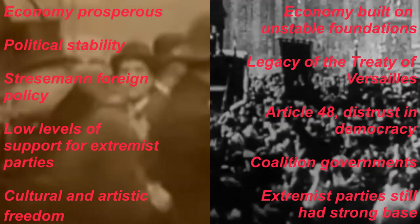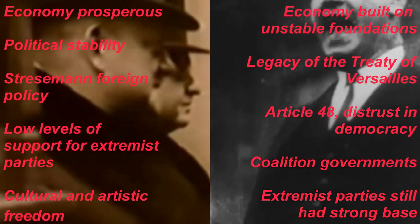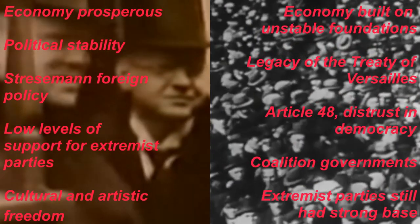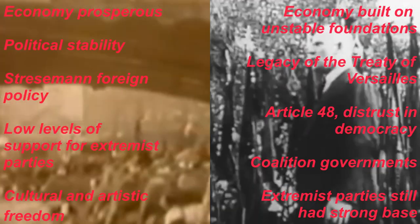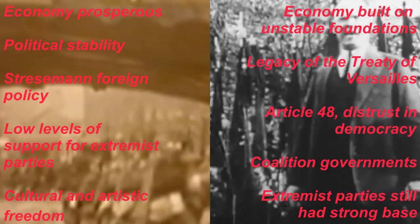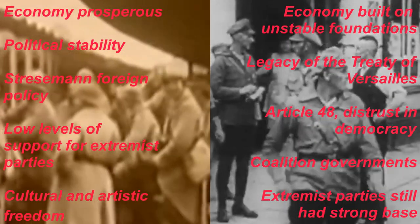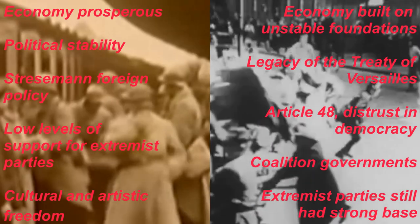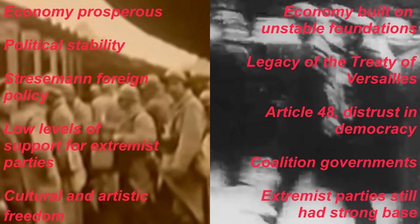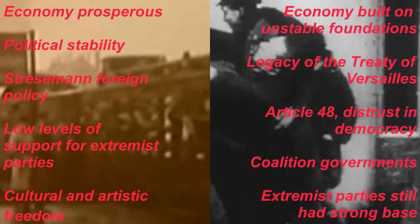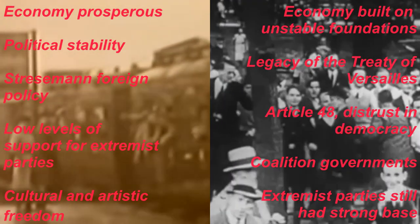We've got Stresemann and his entourage coming out of the car as they go to agree the Dawes Plan in 1924. We've got a more economically prosperous Germany by 1928 — in fact, by the start of 1929 Germany returned to its pre-war industrial production level, so it had officially economically recovered. There is more political stability in 1928, and the parties that support democracy are in charge of the government, working as coalitions and supporting the republic.